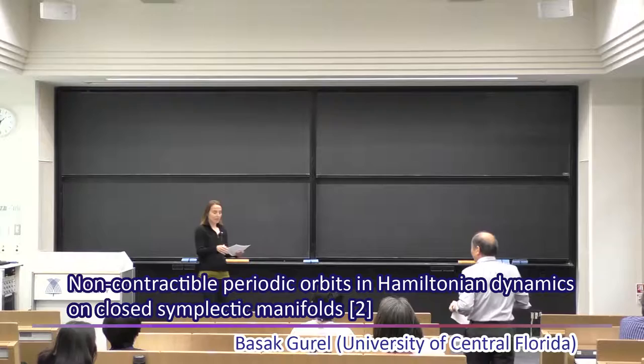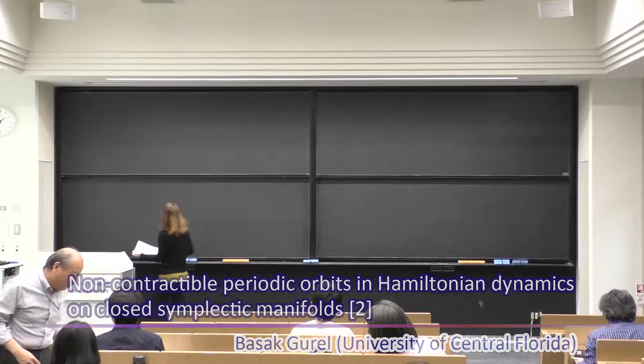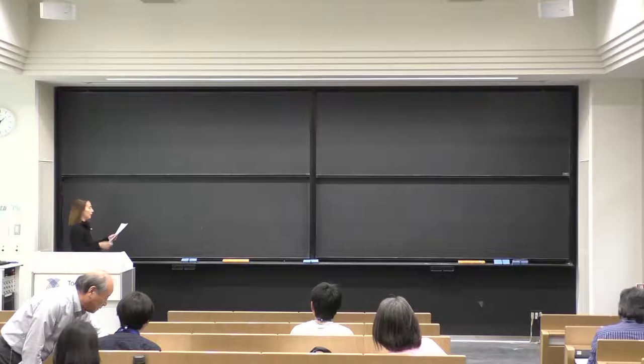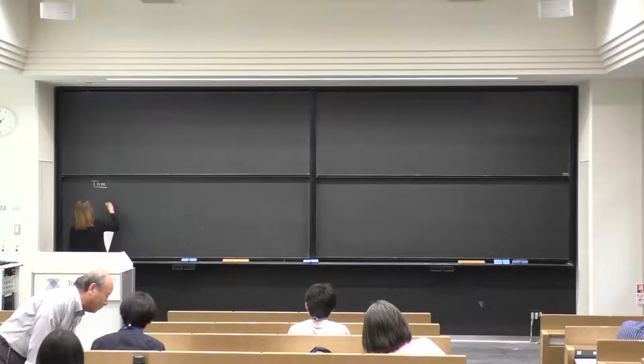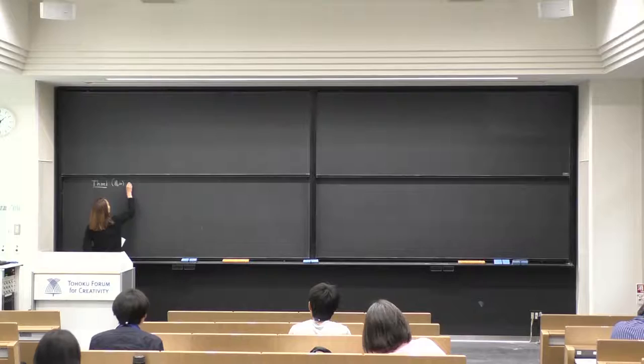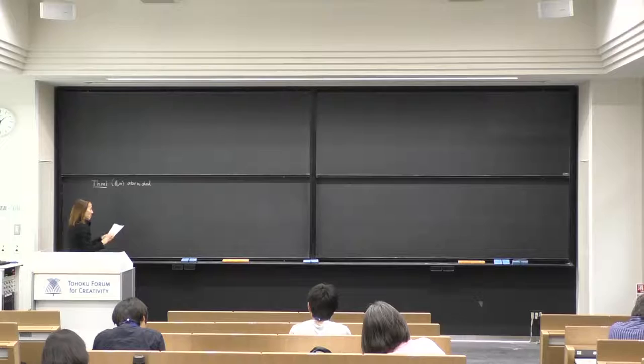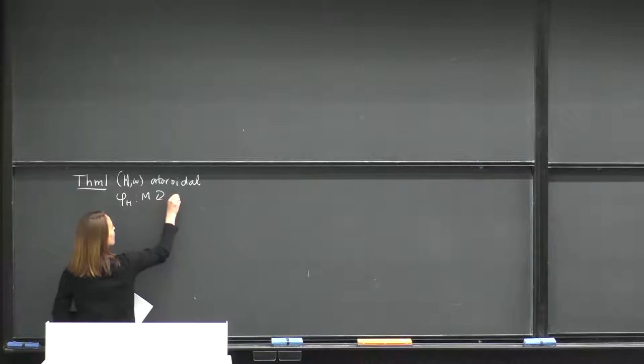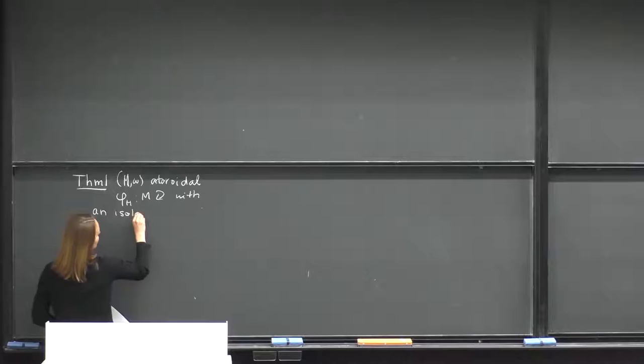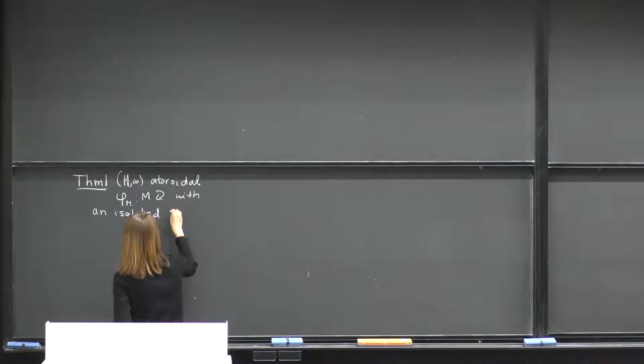Let me start by reminding you what the theorem is, as it will be important later. To recap from last time, here is our theorem that we are trying to prove — Theorem 1. We have an A-toroidal closed symplectic manifold and an isolated Hamiltonian diffeomorphism with an isolated periodic orbit x, one periodic orbit.